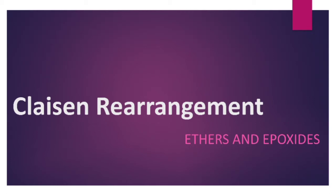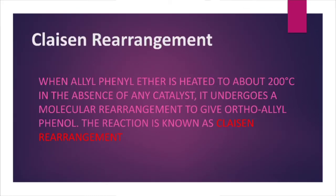In this section I am dealing with Claisen rearrangement. Claisen rearrangement is a kind of intramolecular rearrangement — that is, rearrangement going to take place within the molecule. Claisen rearrangement is simply defined as when allyl phenyl ether is heated to about 200 degrees Celsius in the absence of any catalyst, it undergoes a molecular rearrangement to give ortho allyl phenol.